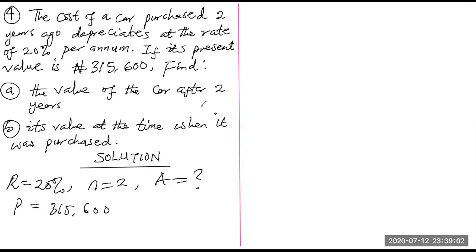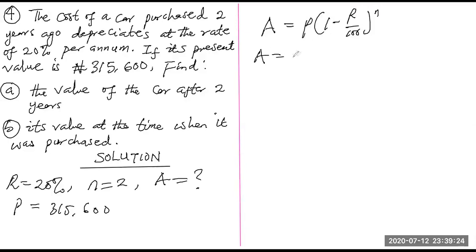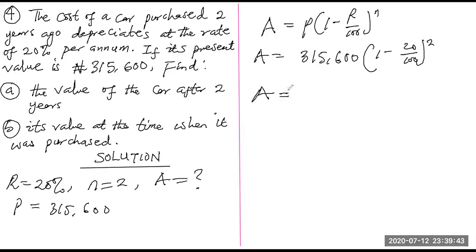Using A = P × (1 − r/100)^n, with P = 315,600, r = 20%, n = 2: A = 315,600 × (1 − 20/100)^2 = 315,600 × (0.8)^2. Using a calculator, the value of the car after two years is approximately ₦201,984.